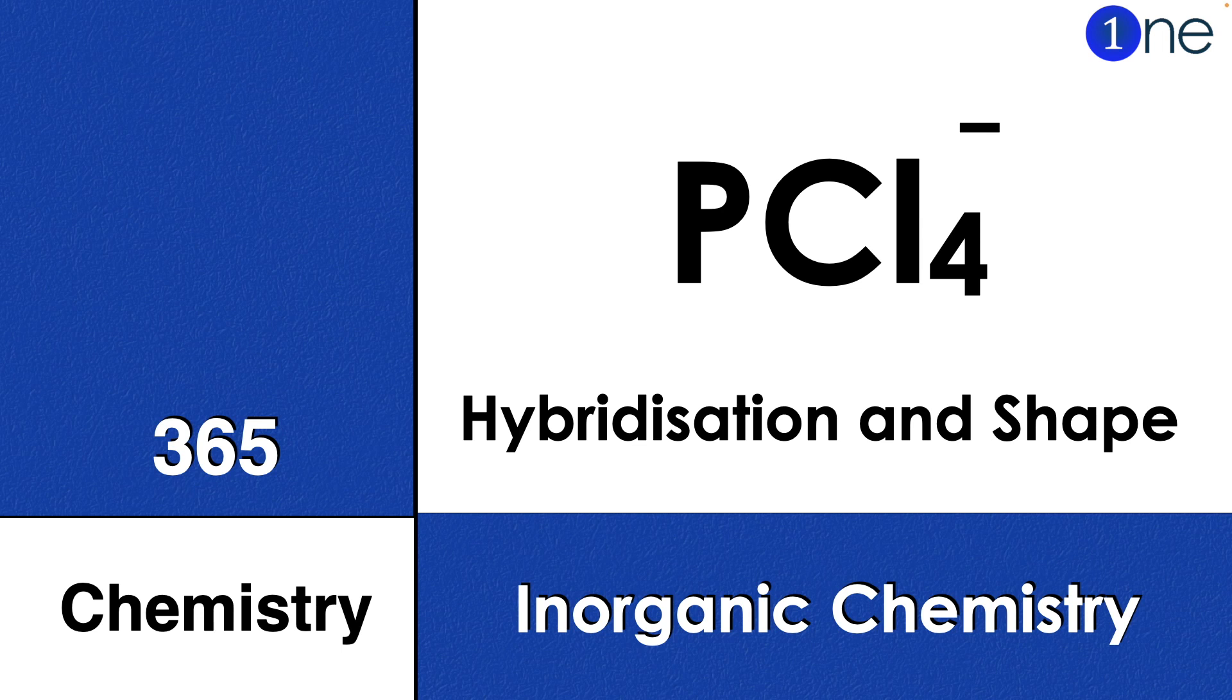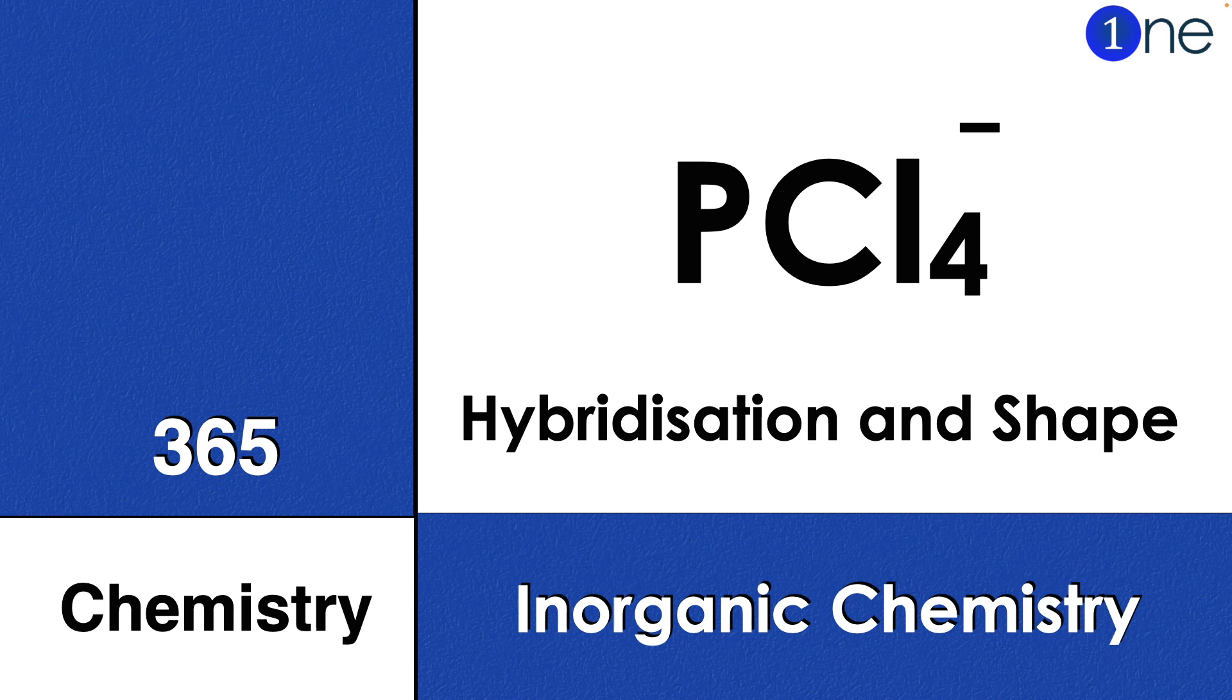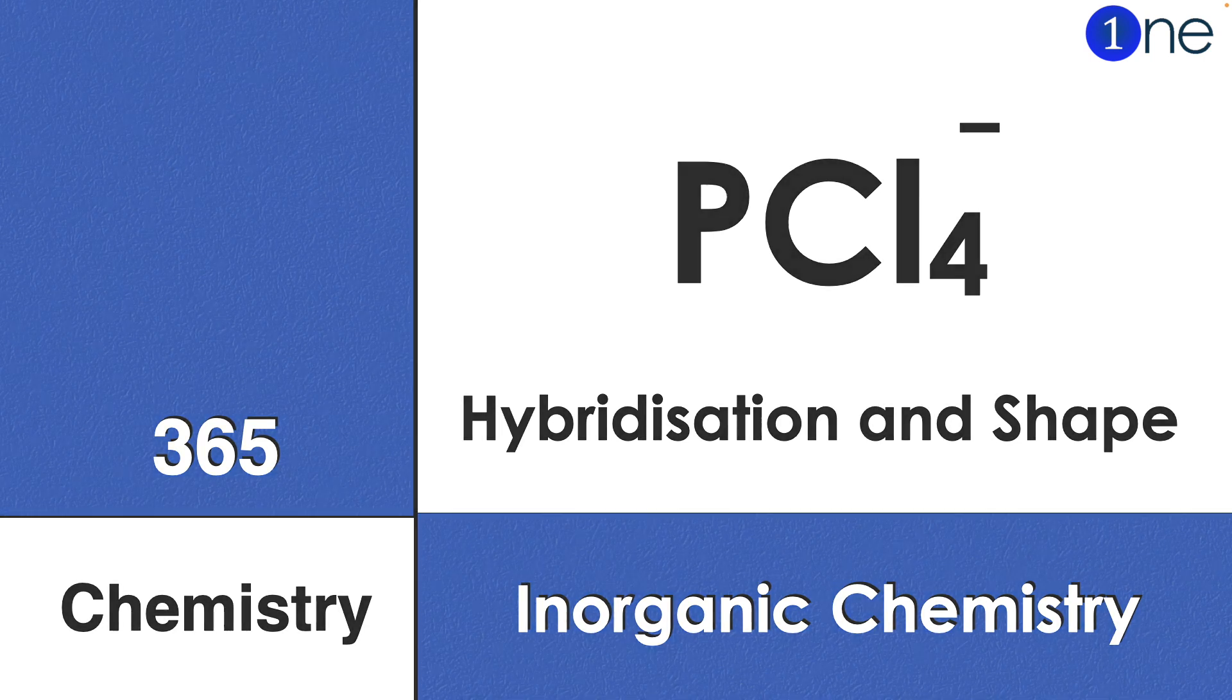Welcome to One Chemistry. This is 365 Chemistry series, inorganic chemistry questions for you. Here you have phosphorus tetrachloride ion, PCl4-. You have to find the hybridization and shape of it.